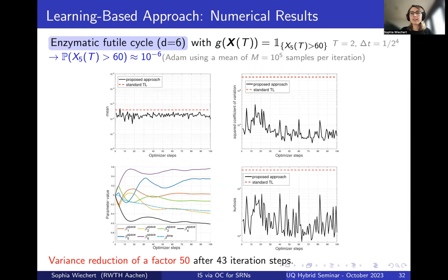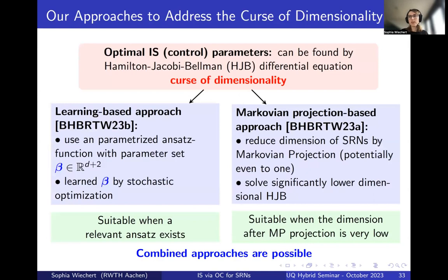For the 6D example with a rare event of order 10^{-6}, the learning-based approach achieves a variance reduction factor of approximately 50. Some general remarks: the approach works well when a suitable ansatz function is chosen. For rare event settings with indicator functions, sigmoids are very powerful. For other observable shapes, a different ansatz — for example a small neural network — can be used, since the closed-form gradient applies to any differentiable ansatz function.